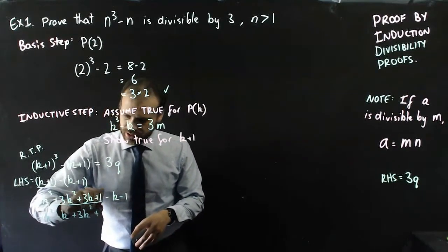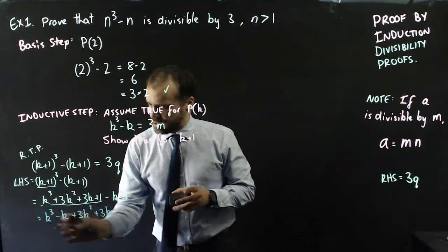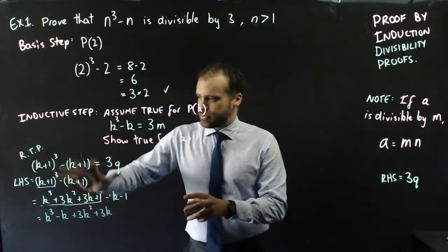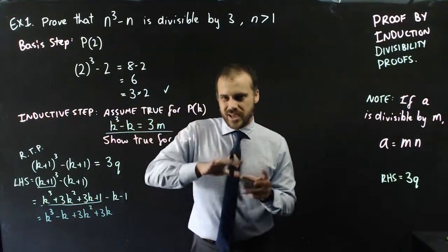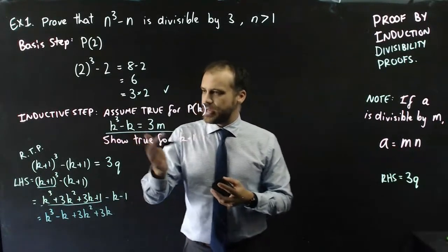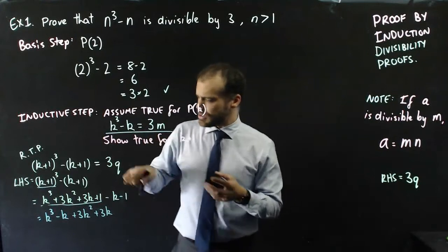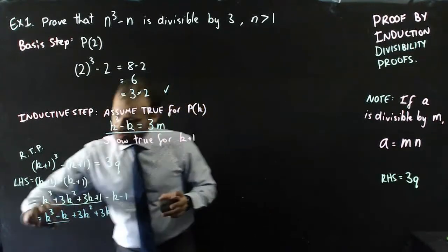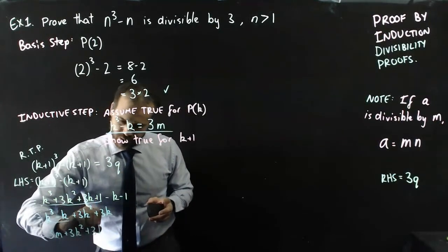I'm going to write the terms in an order that might look unusual but will make sense in a second. I'm going to move that negative k here, and then do the rest: plus 3k squared plus 3k. You might ask why I didn't simplify by combining the negative k and the 3k — that's because I'm looking one step ahead. The goal is to find a place to put what I know: k cubed minus k can be expressed as 3m. So I now express that part as 3m, plus 3k squared plus 3k.